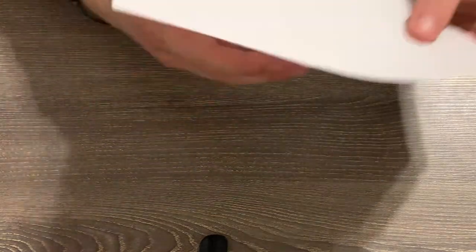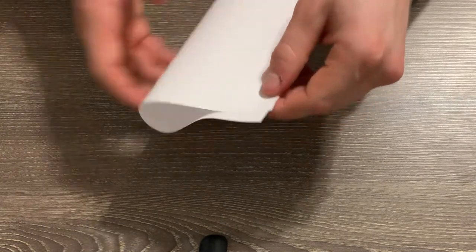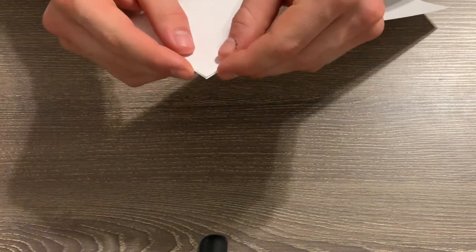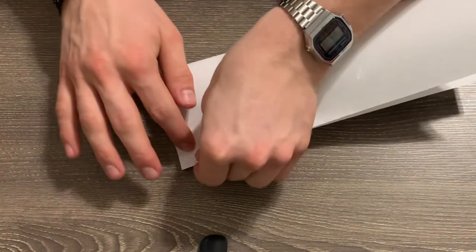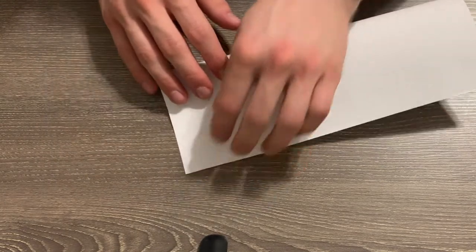So the first paper airplane is one that you've probably made before, but it's called the basic dart. And in order to make this paper airplane, you want to fold your paper down the long way, like you're making a taco.